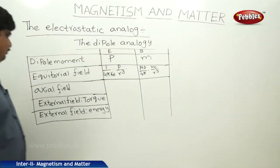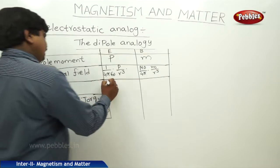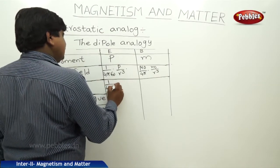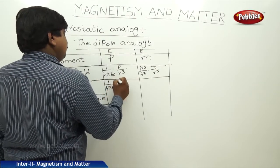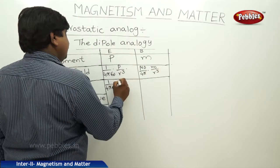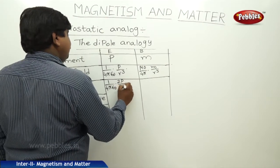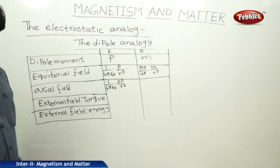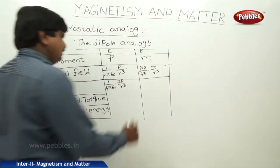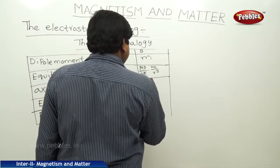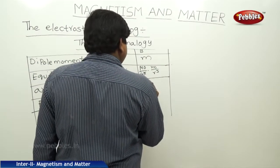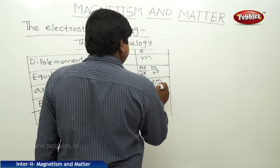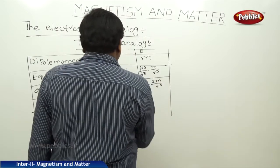For the axial field, the electric field at the axial point is 1 by 4 pi epsilon naught into 2P by R cube. And the magnetic field at the axial point is mu naught by 4 pi into 2M by R cube.